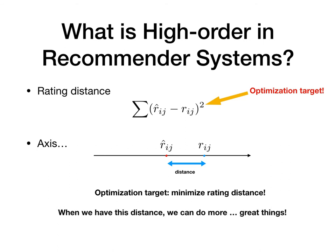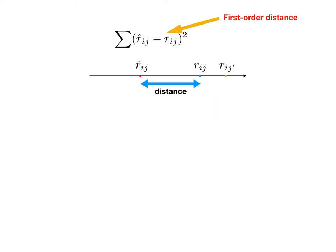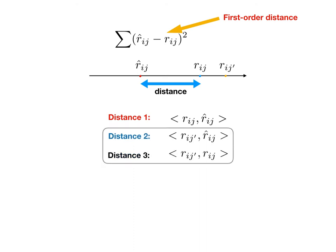The rating distance is also a value. What would happen if we measure two rating distances? Here we add another rating r-ij-prime as a yellow point. At this moment, we have two new distances 2 and 3. These two distances can both be seen as difference of preference to the two items.